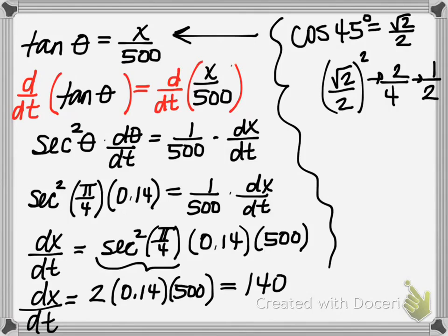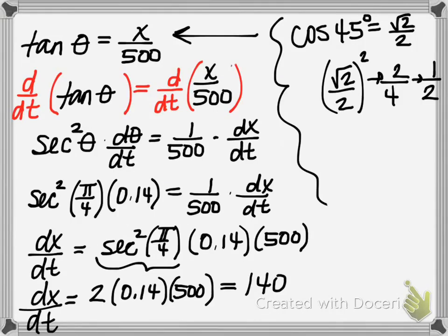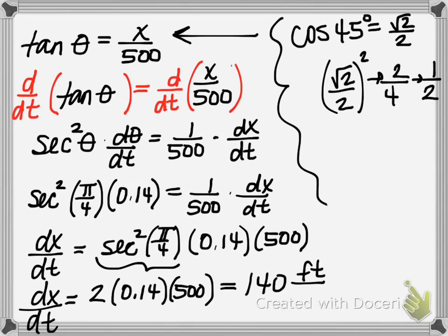Now we just need units. Going back to the diagram, x was the distance between the balloon and the ground measured in feet, and time was measured in minutes. So dx/dt equals 140 feet per minute. At the moment the rangefinder's angle of elevation is π/4, the balloon is rising at a rate of 140 feet per minute. The positive rate makes sense because the distance between the balloon and the ground is increasing.